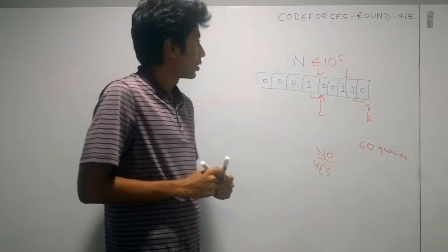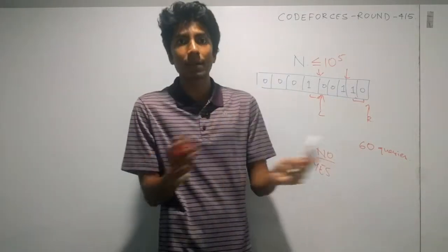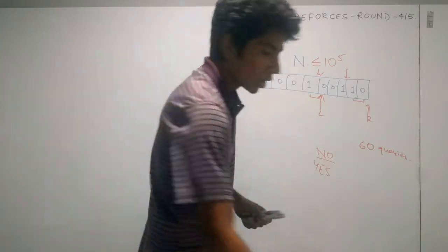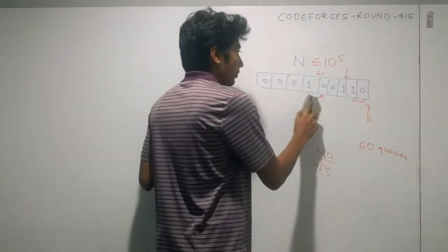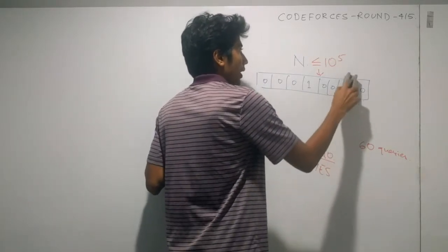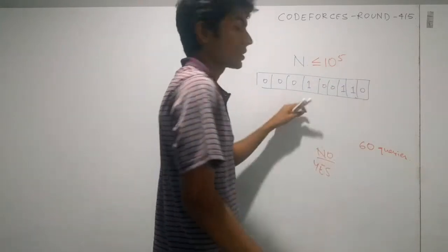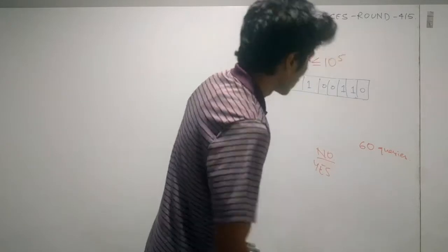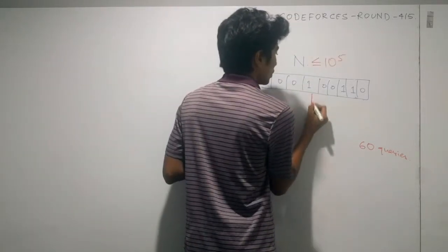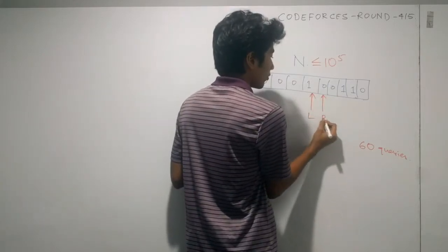This naive approach is not really helping us constrain the search space — it's actually making things ambiguous. The strategy we can apply, and it requires some trial and error to be honest, is to go to the center of the entire range initially. Right at the center, with the center element as left and center plus one as right.